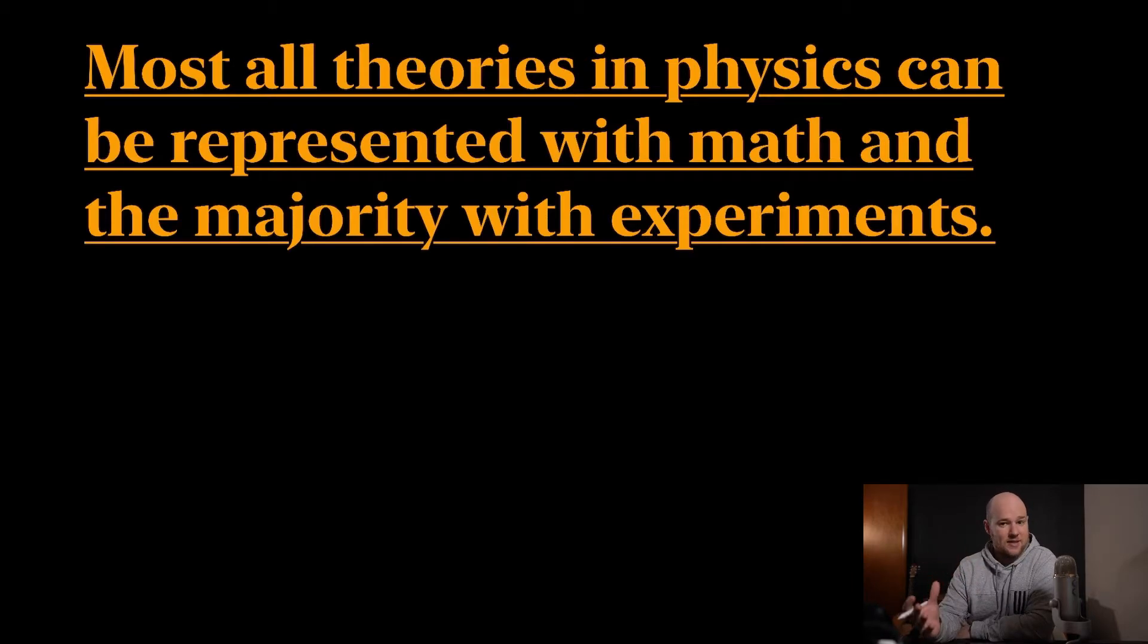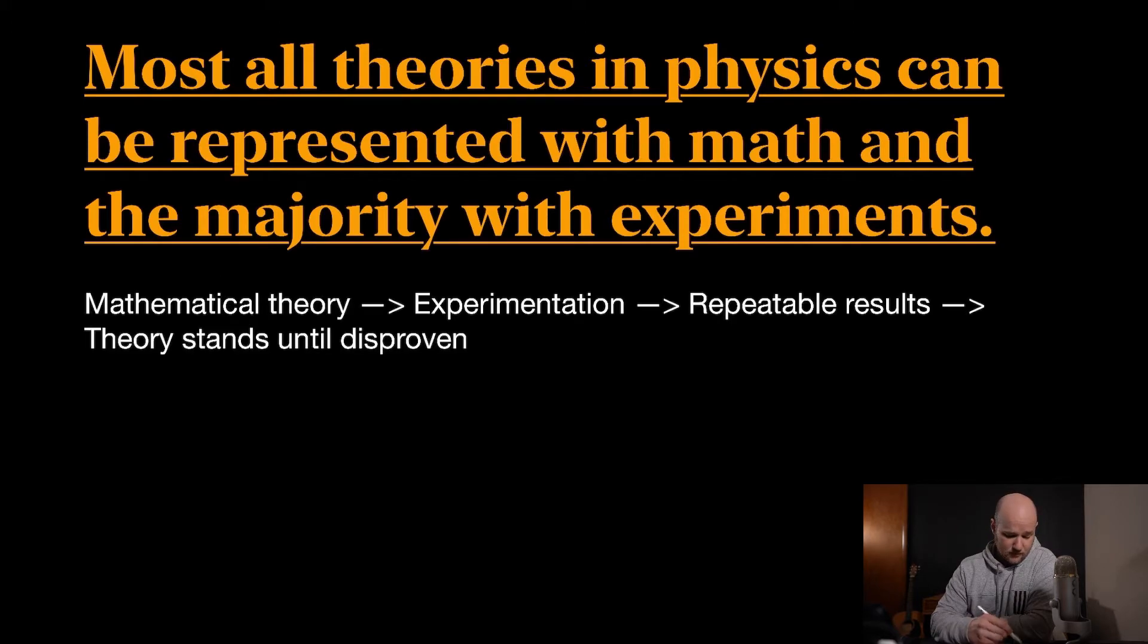And also, experimentation is something that's really important in physics, just like all sciences. If you can do experiments, it's really helpful. So here's kind of the process that goes on in physics a lot of the time: you have some sort of mathematical theory, and you try to experiment with that mathematical theory and see if your math is correct in your experiments. And if you can get some sort of repeatable result, then your theory usually stands until it's disproven. Now sometimes theories are disproven through future math equations, and sometimes they're not. A lot of them hold strong for a very long time.